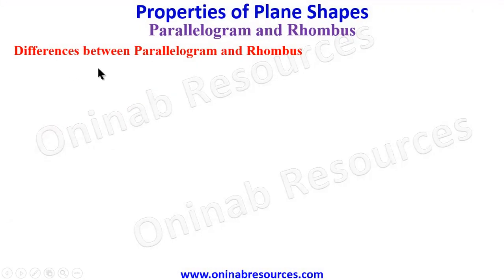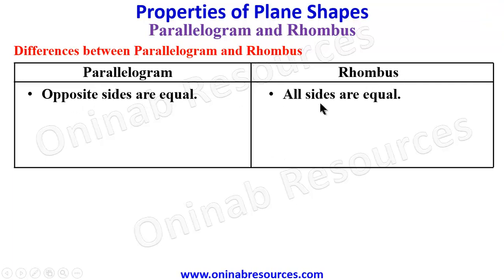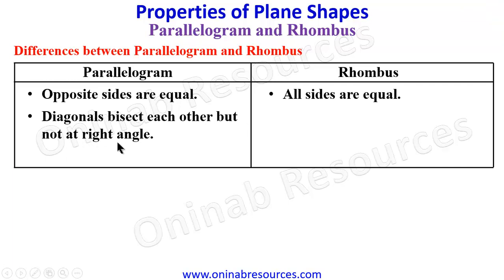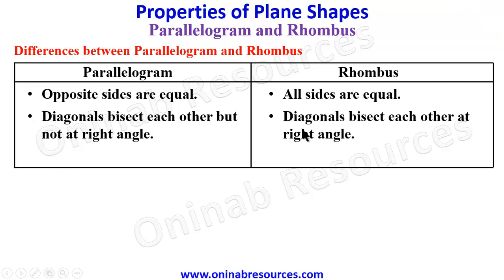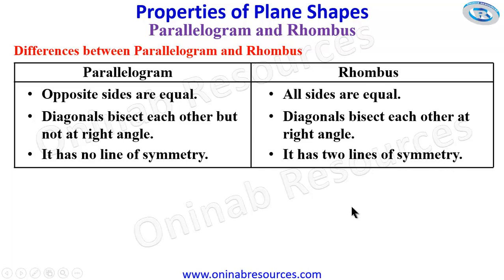We then go ahead to find the differences between parallelogram and rhombus in a tabular form. For the parallelogram, opposite sides are equal, while for the rhombus, all sides are equal. Next, for the parallelogram, diagonals bisect each other but not at right angle, while for the rhombus, diagonals bisect each other at right angle. And the last difference: the parallelogram has no line of symmetry, while the rhombus has two lines of symmetry. That's all for the differences between parallelogram and rhombus.